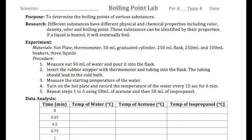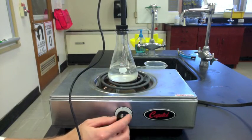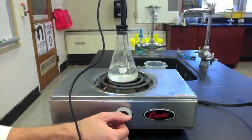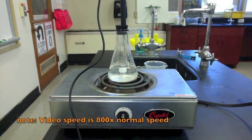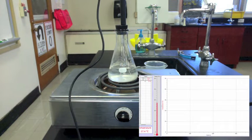If a liquid is heated, it will eventually boil. We will find the boiling point of water by heating it with a thermometer in it. We will check the thermometer every 15 seconds. When the water starts to boil, the temperature will stop rising — that is the boiling point of that liquid. We will collect the data on a chart and then graph it on a temperature versus time graph.